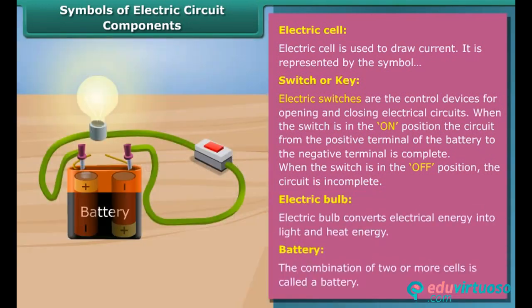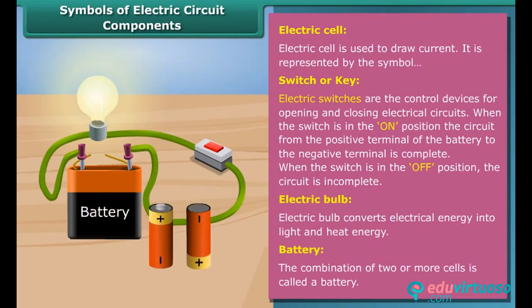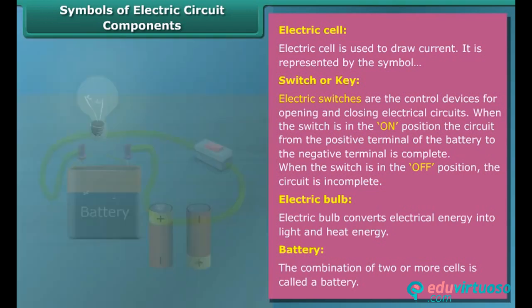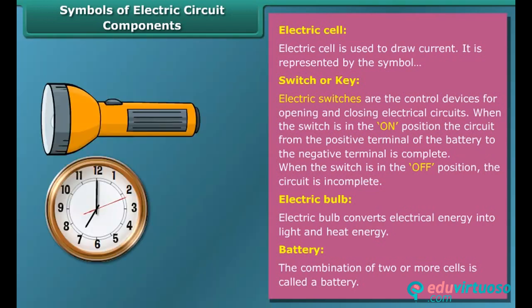The combination of two or more cells is called a battery. In a battery, the positive terminal of one cell is connected to the negative terminal of the next cell. Many devices such as torches, wall clocks, watches, and toys use batteries.